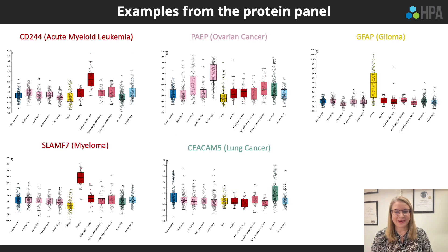Five examples of proteins used in the cancer prediction model are shown, each with elevated protein expression in at least one type of cancer.